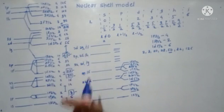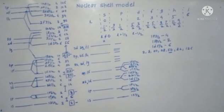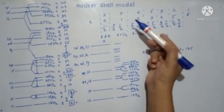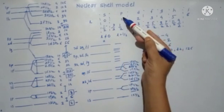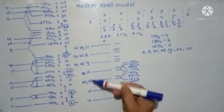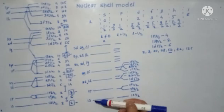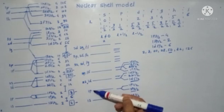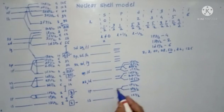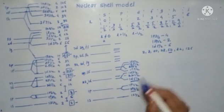So this is how the nuclear shell model can be drawn, once you know the relation between L and S, how the orbit is splitting, and how many energy levels are available in nuclear and particle physics.